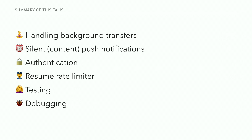What we'll cover today: we'll talk about what is the difference in handling transfers running in the background, silent content push notifications and their limitations, how authentication in the background differs from a foreground session, what the resume rate limiter is and how to work with it, how to test background processing features, and finally how to debug them.